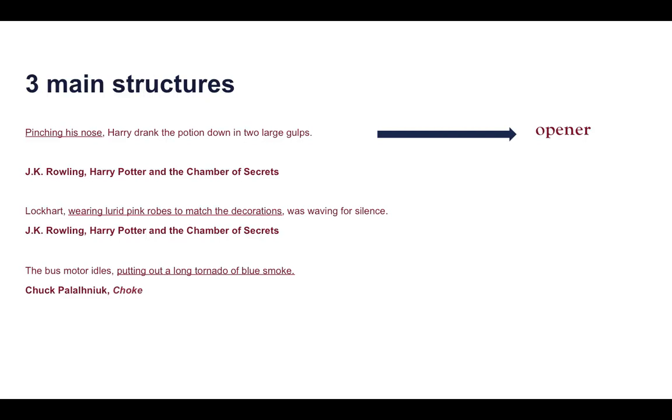You see the second example, another one from Harry Potter there: Lockhart, wearing lurid pink robes to match the decorations, was waving for silence. We call that an interrupter because it's happening in the middle of the sentence. It's actually breaking the subject and the verb. If we got rid of that underlined part there we could just have Lockhart was waving for silence. But we put in that -ing phrase, wearing lurid pink robes to match the decorations, it interrupts the subject and the verb.